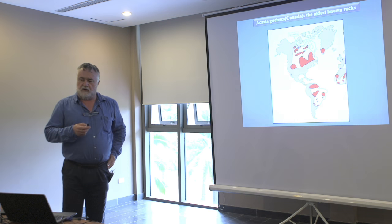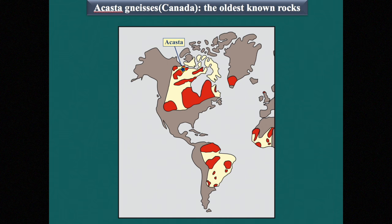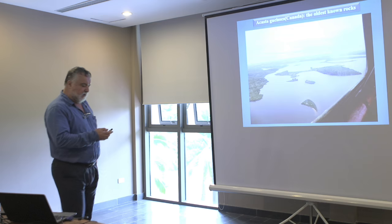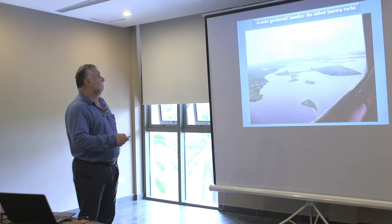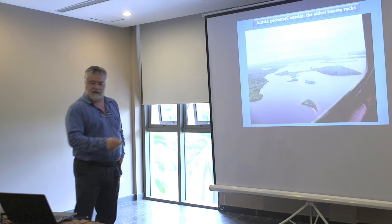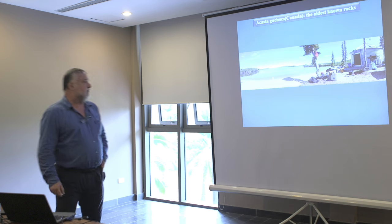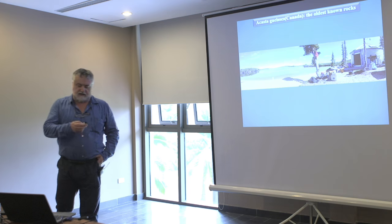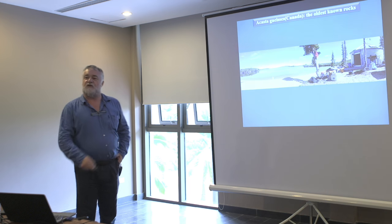The oldest rocks that we know are from Canada, in the Acasta area, in the northwestern territories far to the north. They outcrop on a very small place — a small island. The place where we can find these rocks is quite limited, just a few outcrops. Canadian geologists built a very nice field camp for geologists who work there, with something very important — the barbecue.